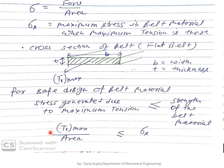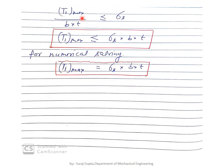The maximum force divided by area must be less than or equal to sigma_s. So T1_max divided by b·t should be less than or equal to sigma_s. Therefore T1_max must be less than or equal to sigma_s multiplied by b·t. For numerical solving, we use the equal sign: T1_max equals sigma_s multiplied by b·t.